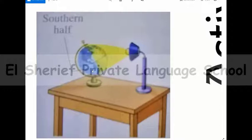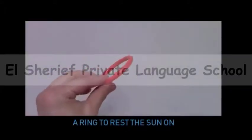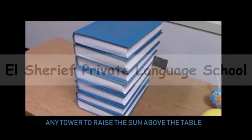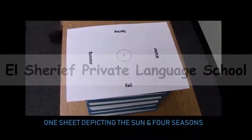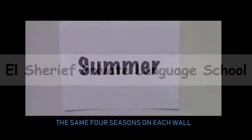When the southern half is inclined towards the electric lamp, a large part of the southern half becomes light while a small part of the northern half becomes light — this is summer in the southern half and winter in the northern half.